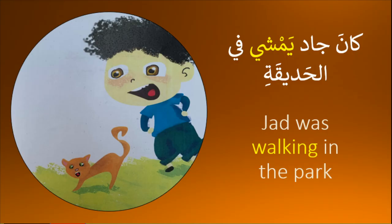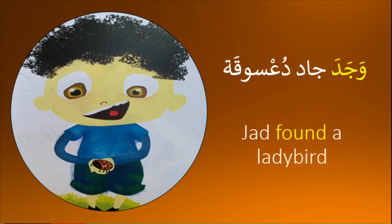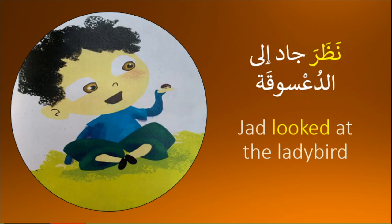كان جاد يمشي في الحديقة. وجد جاد دعسوق. نظر جاد إلى الدعسوق. (Jad was walking in the park. Jad found a ladybird. Jad looked at the ladybird.)